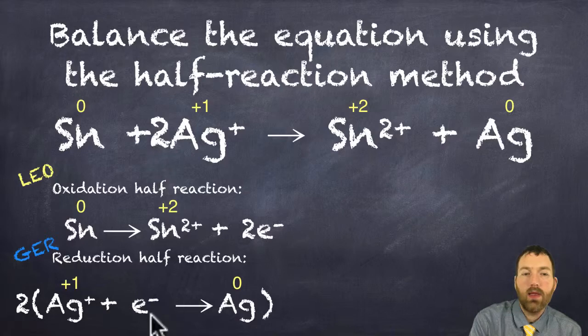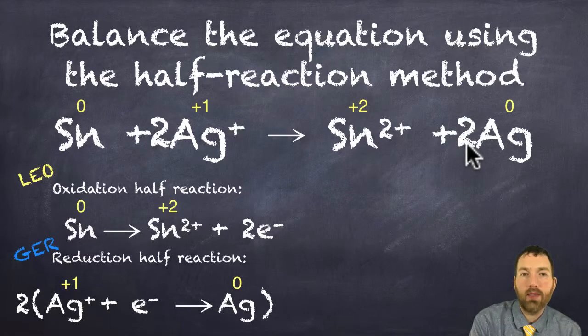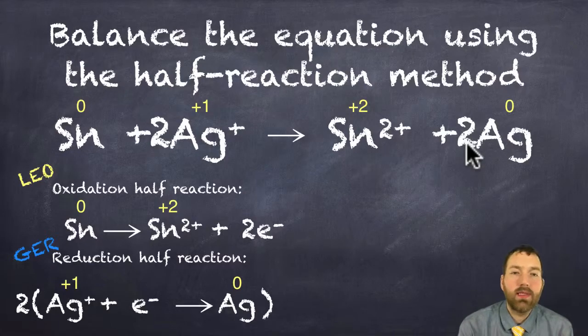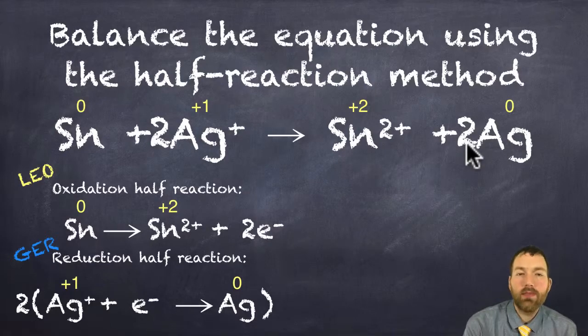So I'll put that there. Every time we see a silver atom, I'm going to multiply that by two. So that is your balanced half reaction.